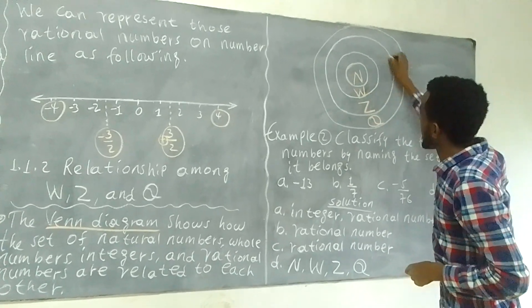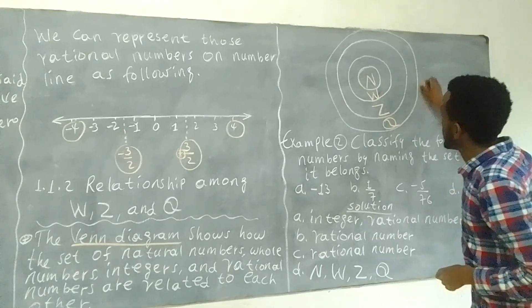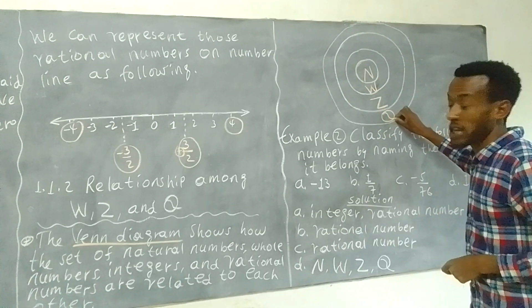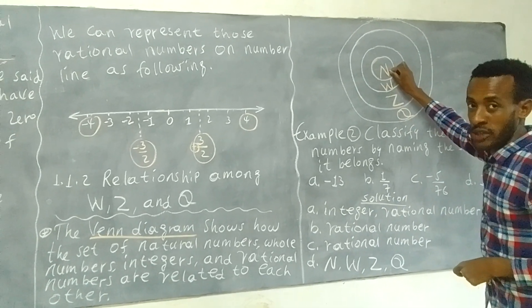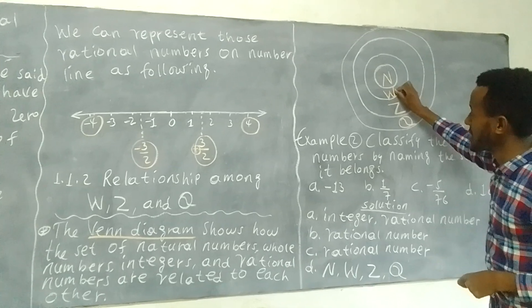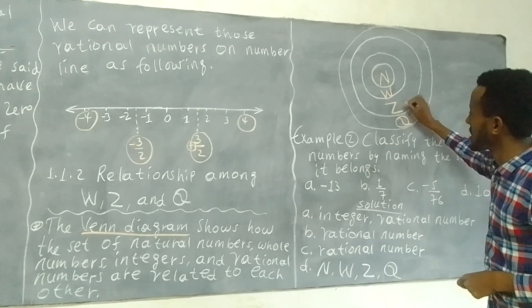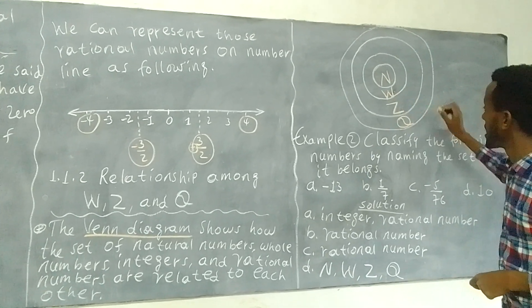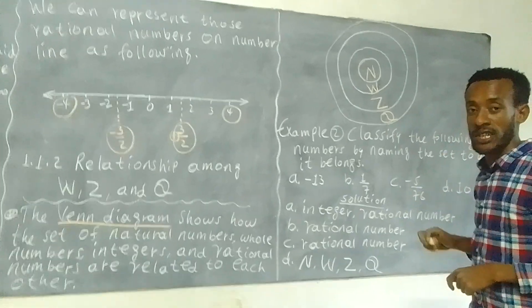N represents natural number, W represents whole number, Z represents integer, and capital Q represents rational number.